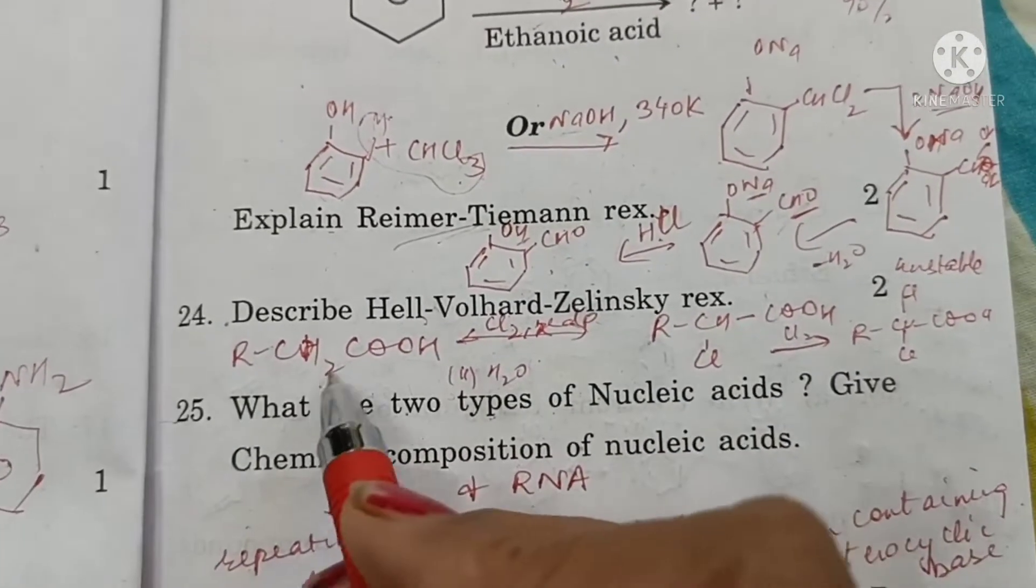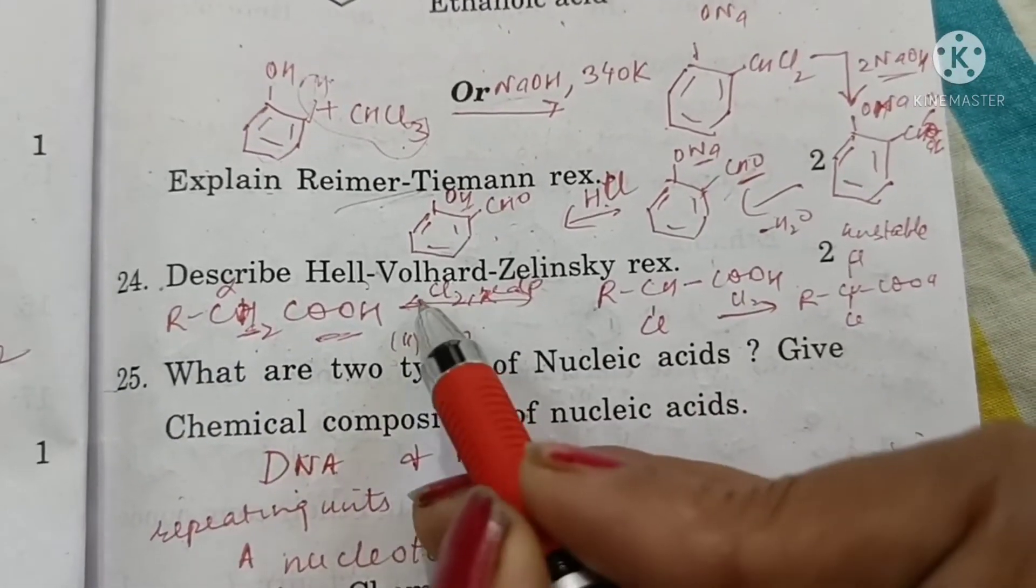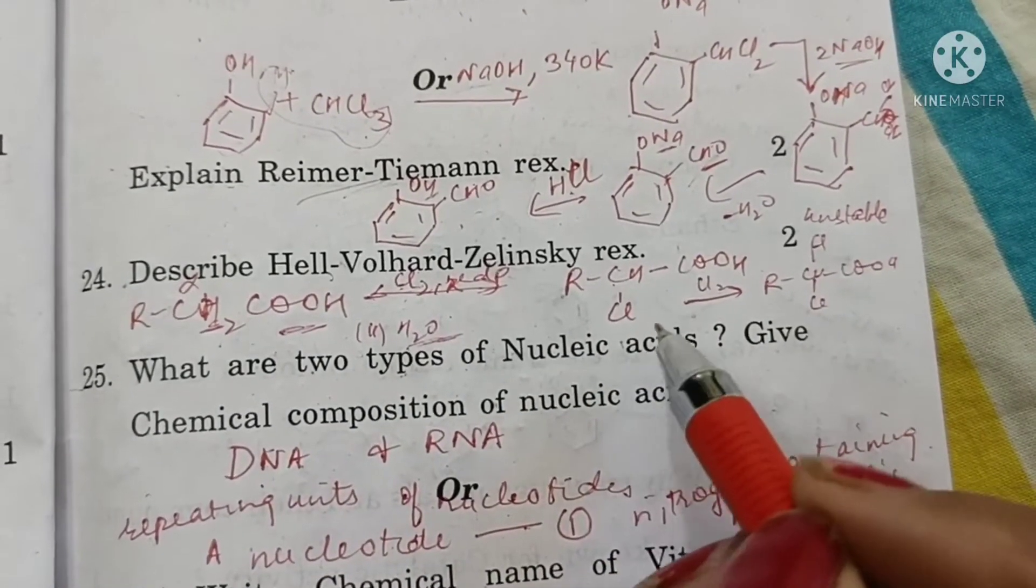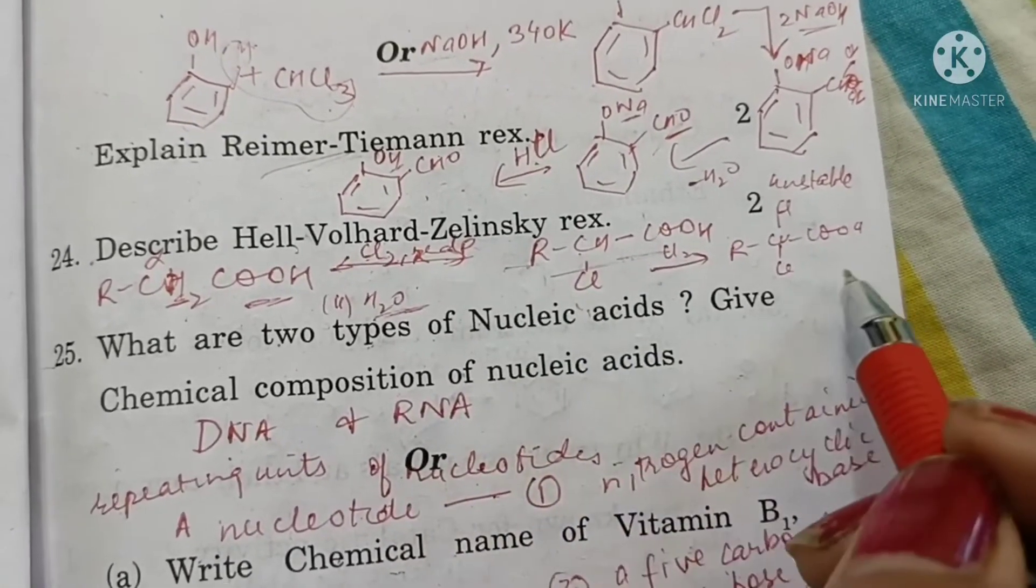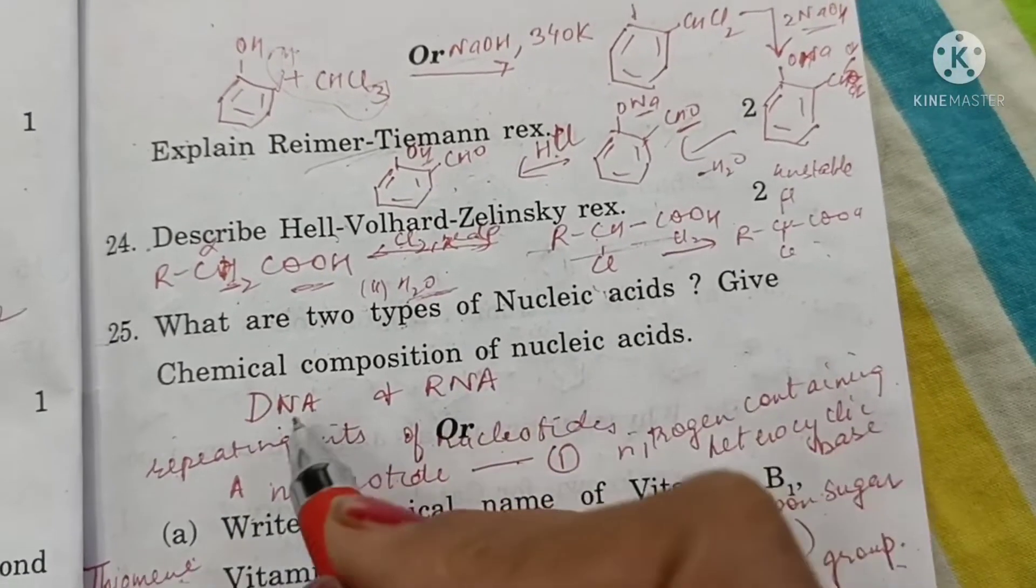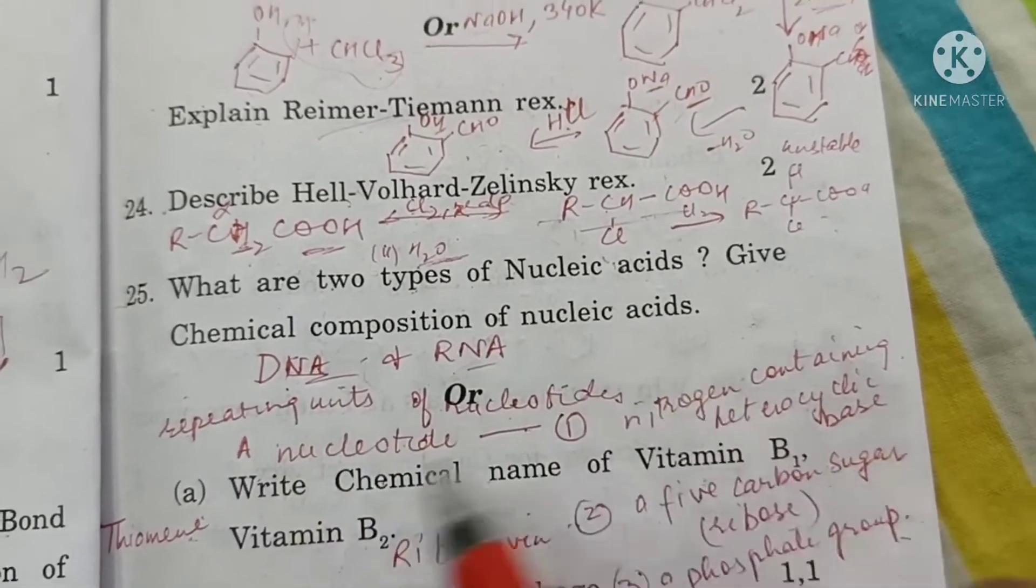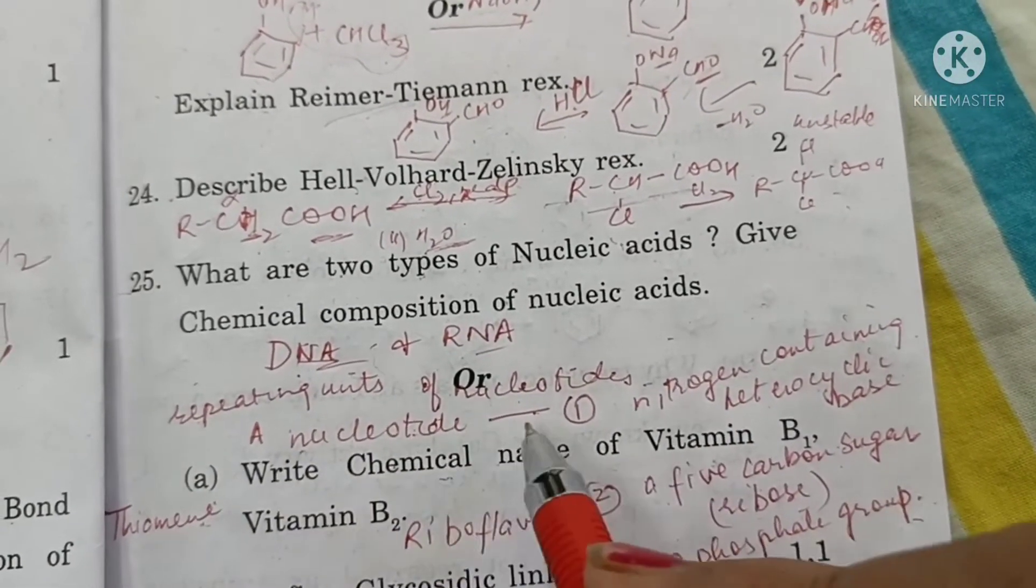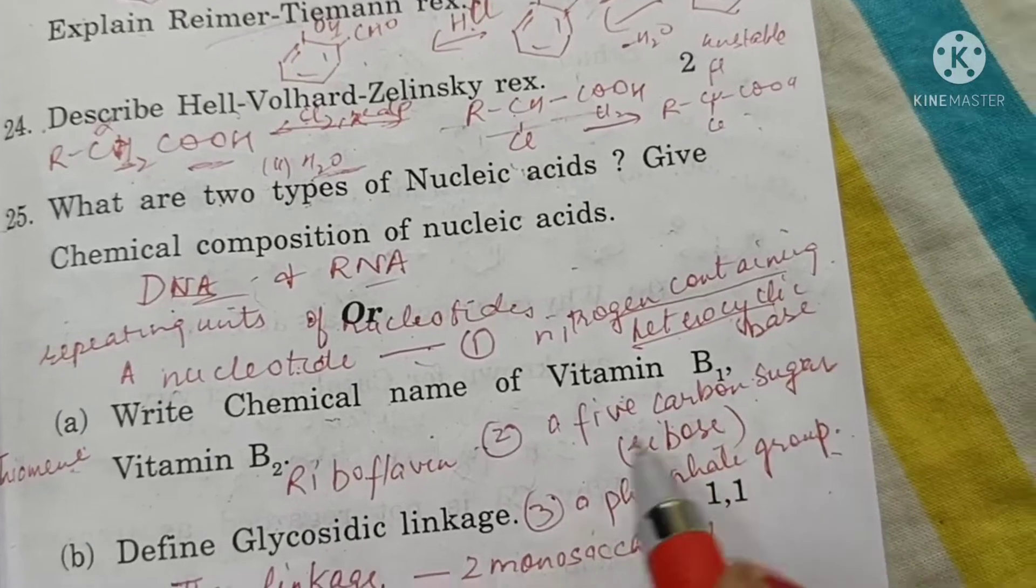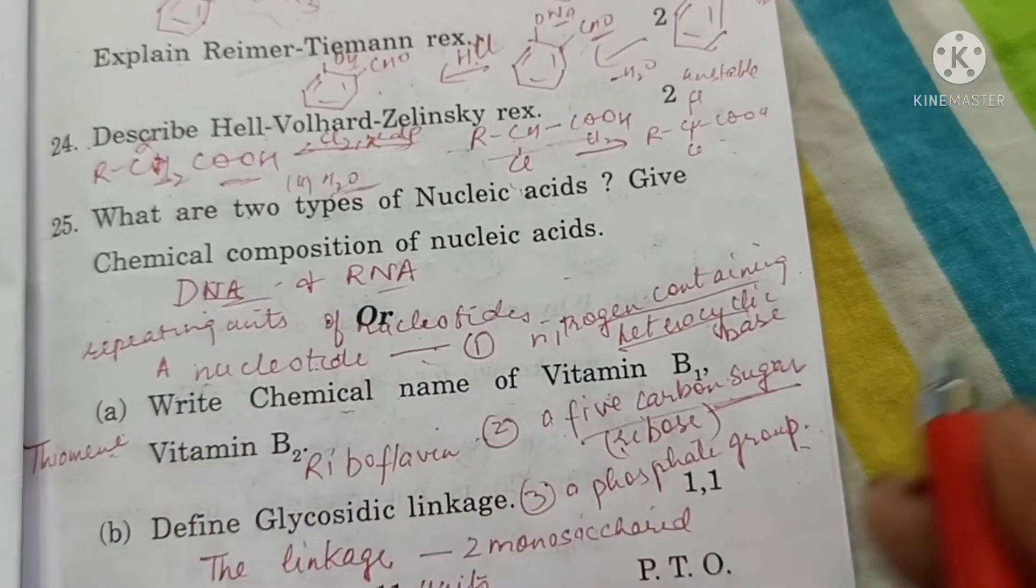In Hell-Volhard-Zelinsky reaction, the hydrogens present at alpha position of the acid get exchanged with halogens when reacted with halogen in presence of red phosphorus and then with water to form alpha halo acids. This will occur as long as there are alpha hydrogens present. What are 2 types of nucleic acids? These are DNA and RNA. Give chemical composition. They are formed by the polymerization of nucleotides. A nucleotide consists of 3 parts: nitrogen containing heterocyclic base which is attached to a 5 carbon sugar, ribose in case of RNA and deoxyribose in case of DNA, and a phosphate group.